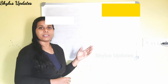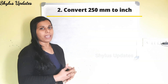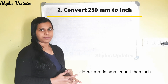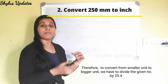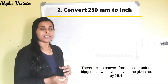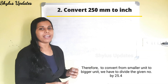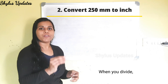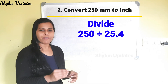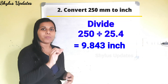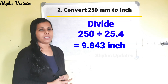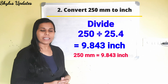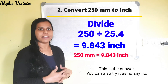Second example: convert 250 mm to inch. Here, mm is the smaller unit than inch. Therefore, to convert from smaller unit to bigger unit, we divide the given number by 25.4. When you divide 250 by 25.4, you will get 9.843 inch. So, 250 mm is equal to 9.843 inch.